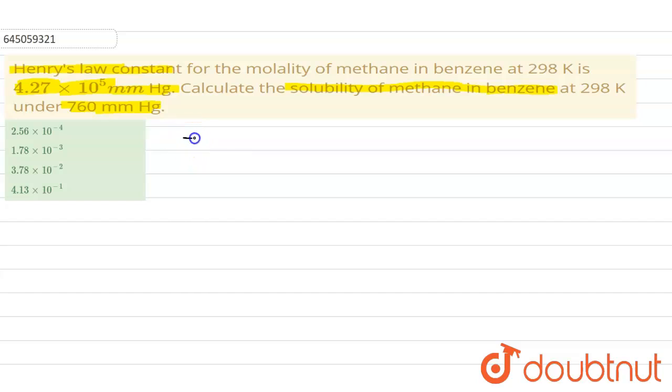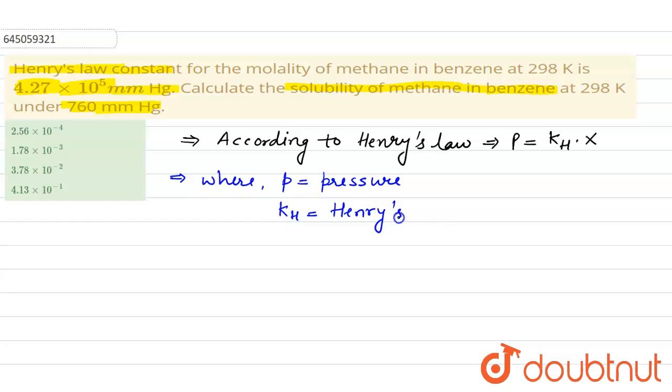So, we know according to Henry's law, according to Henry's law, P is equal to kh into x, where